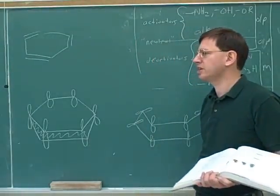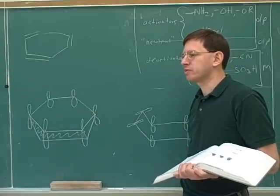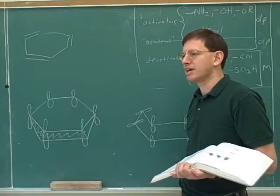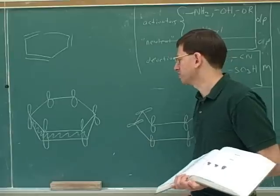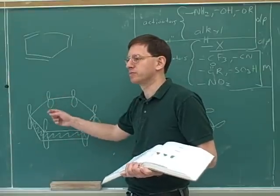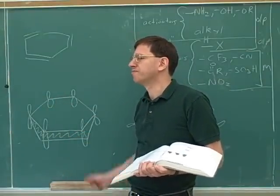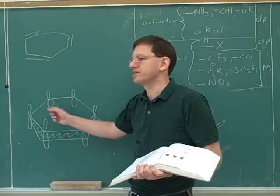So remember, what does conjugation mean? It means side to side overlap of three or more p orbitals. Well, we can see how benzene fits that characteristic. Side to side overlap of all six orbitals.